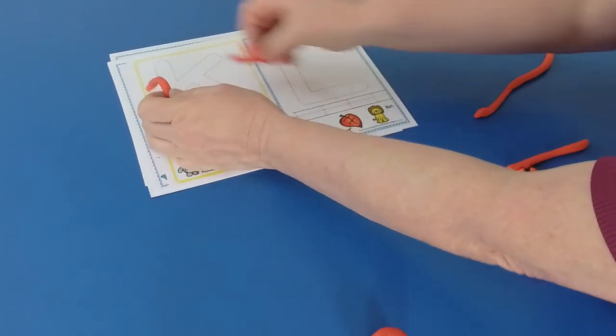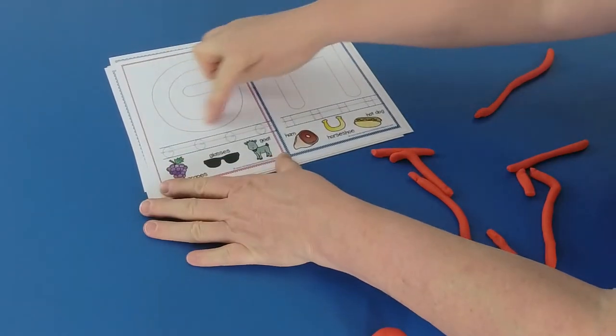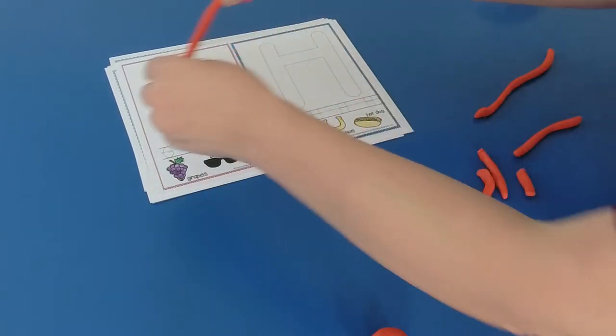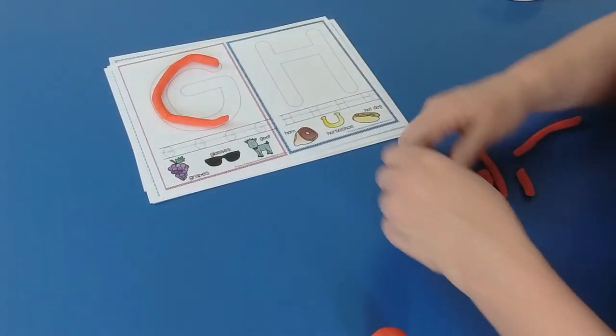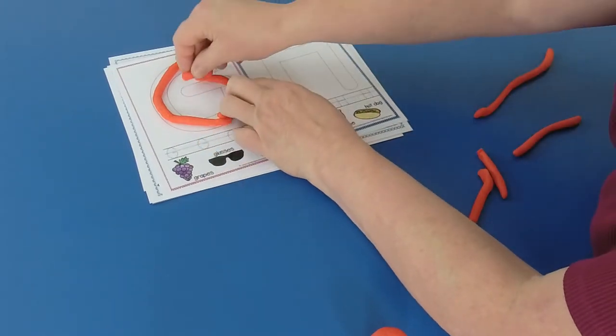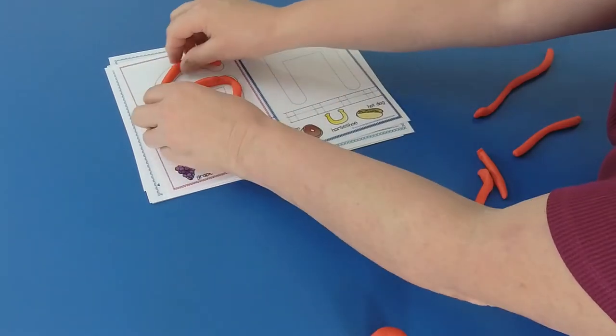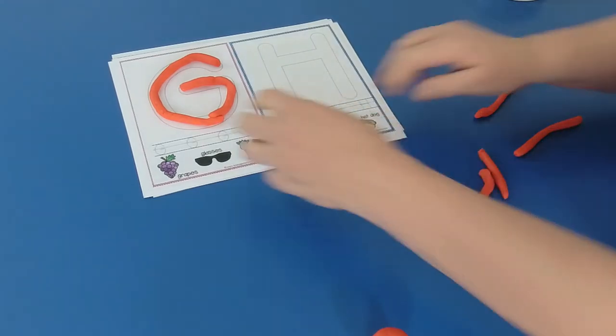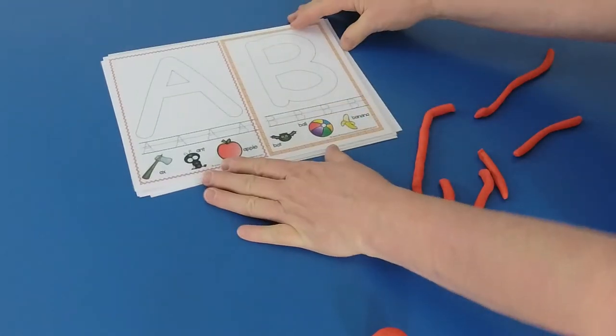We're going to do one more today. Tell me what this letter is. It's a G. So let's get a long snake and curve it all the way around. It still isn't long enough, is it? There, we've built our G. You guys keep building all your letters. Keep practicing.